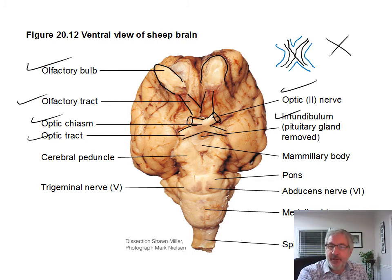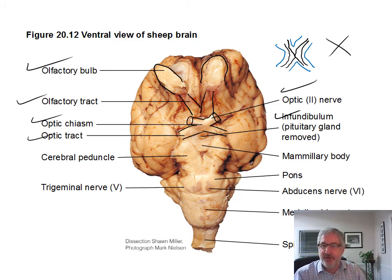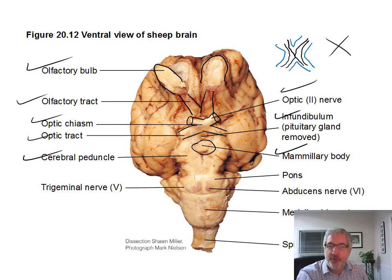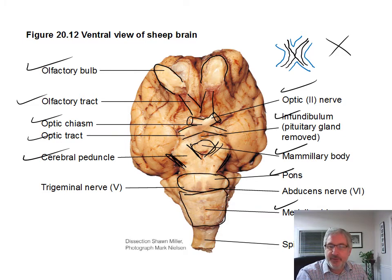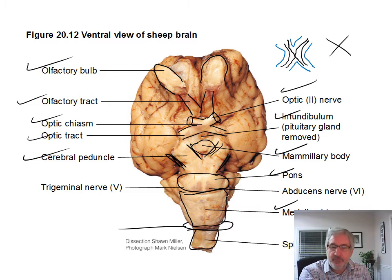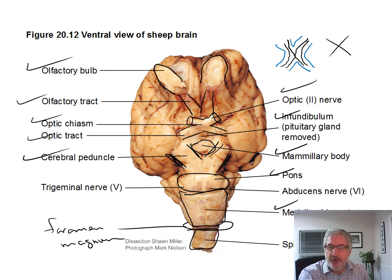You also have the infundibulum down here. The pituitary gland is usually gone when you pull the brains out — it just pops off at the infundibulum. You have a mammillary body — actually a pair of those. Then you have cerebral peduncles here and here — those are your large white fiber tracts going up into the brain. Then you have the pons, and the medulla oblongata is this piece here. Then the spinal cord starting down here, and the foramen magnum would be approximately right there.